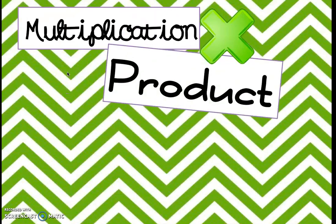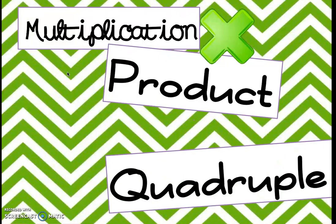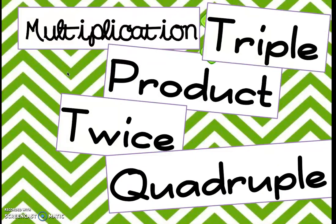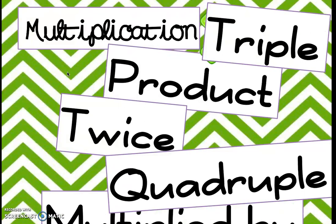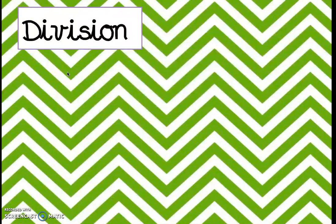Multiplication. We have product — product is the answer to a multiplication problem, so anytime we see that, we know we're going to be multiplying. Quadruple means we're multiplying by four, twice means we're multiplying by two, triple means we're multiplying by three. All of those words — multiplied by, times — tell us that we're going to be multiplying.